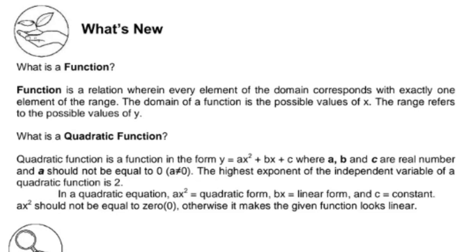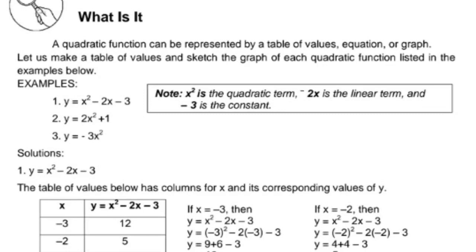What is a quadratic function? A quadratic function is a function in the form y equals ax squared plus bx plus c, where a, b, and c are real numbers and a should not be equal to 0. The highest exponent of the independent variable is 2. In a quadratic equation, ax squared is the quadratic term, bx is the linear term, and c is the constant. Ax squared should not be equal to 0, otherwise it makes the function look linear.